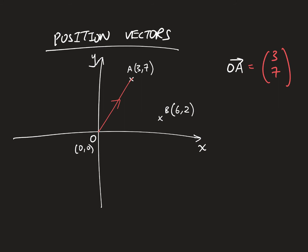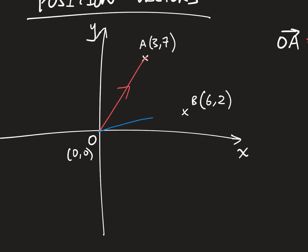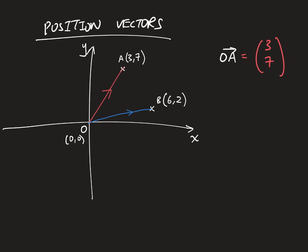And naturally, OB will be 6 units in the x direction, and 2 units in the y direction. And so that is convenient, because it allows me to have different points, and it allows me to tell where each point is via a vector.